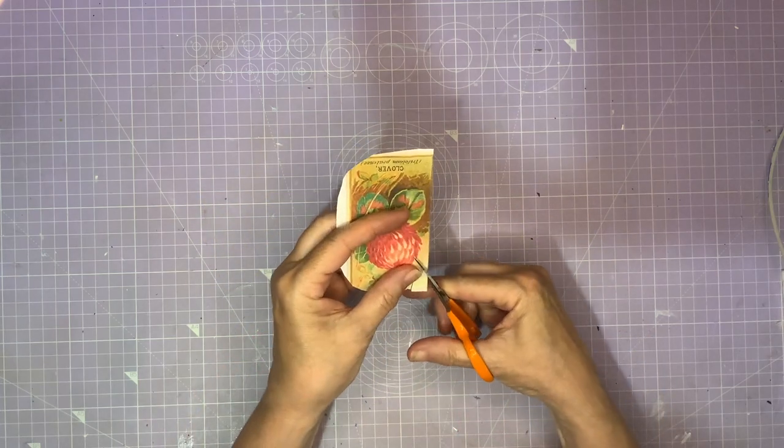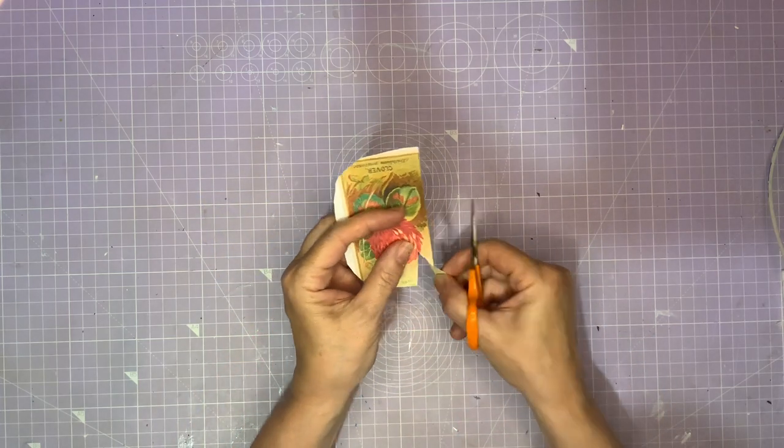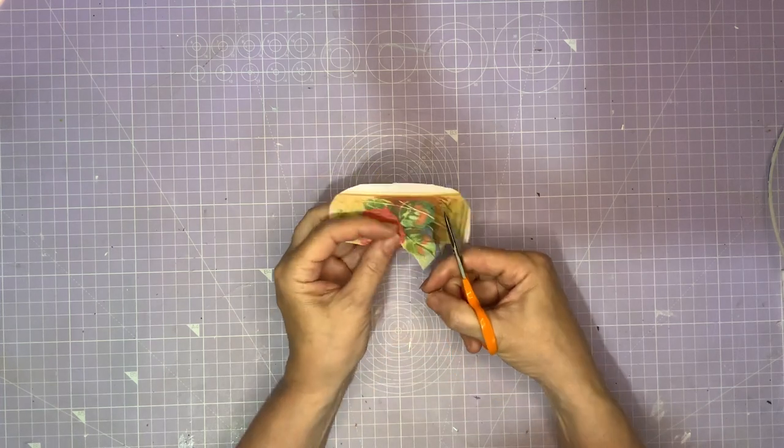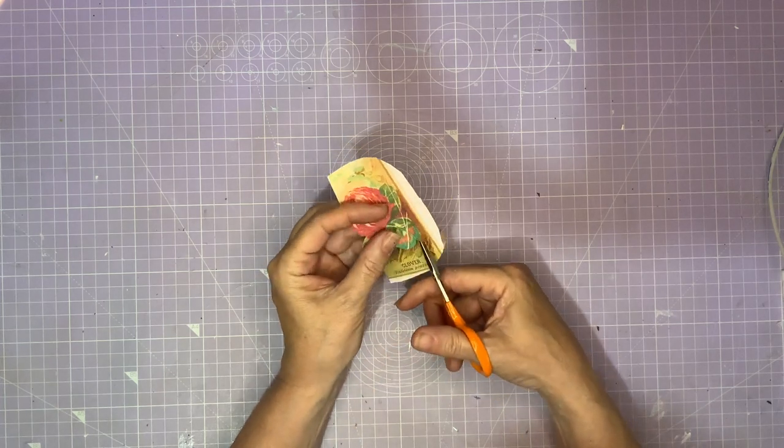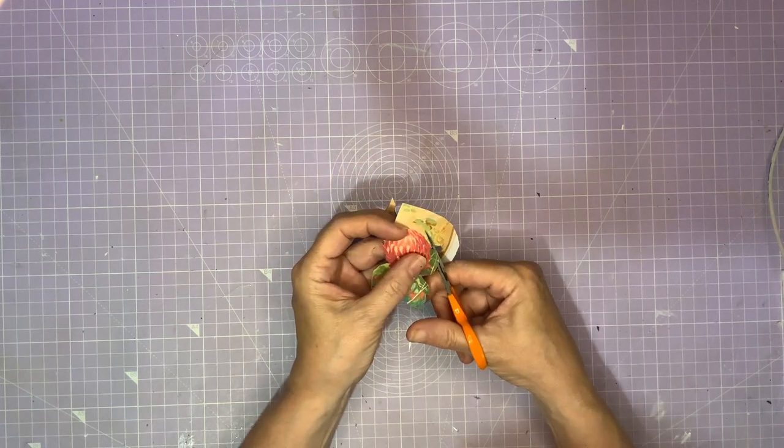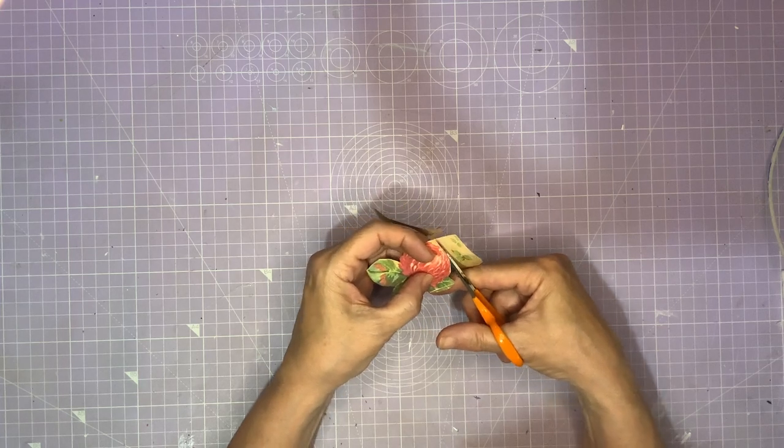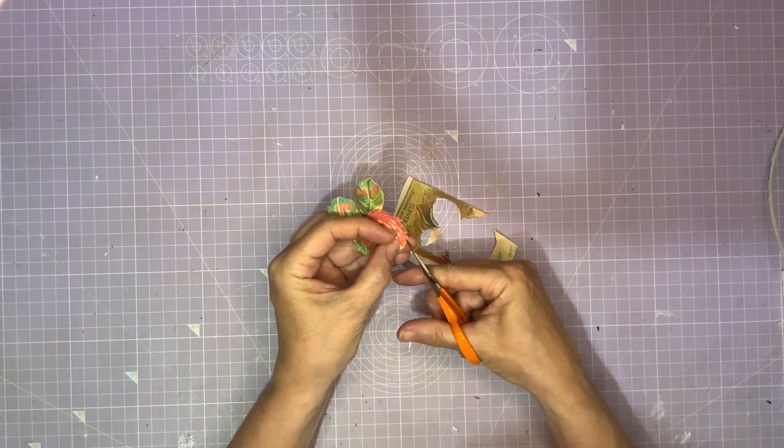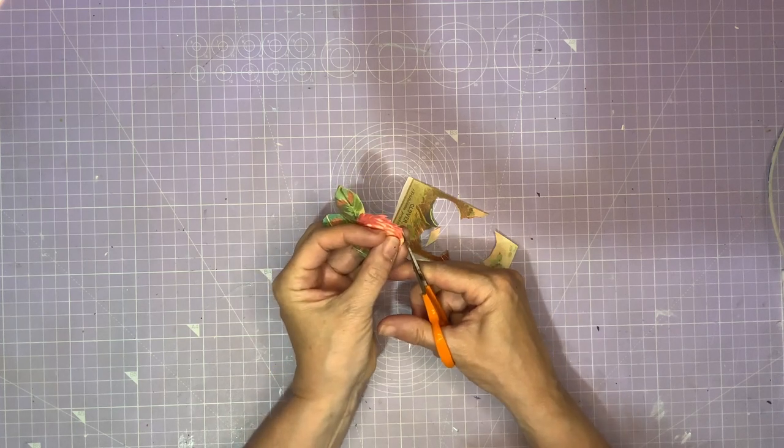This is what they call fussy cutting and it really is fussy to do. So pick images that are not too intricate if you're in a hurry and if you really like a challenge, the more intricate the better. I've picked one sort of midway and then you just cut them out, doing as best a job you can.